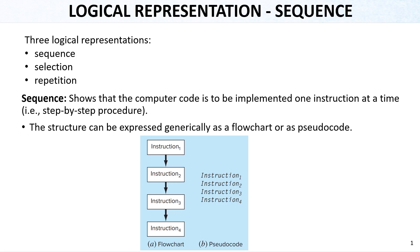In our previous slides, we talked about the logical representations. We said that there are three logical representations: sequence, selection, and repetition. These three are actually ways of showing the algorithms or the procedures that exist in algorithms — three different procedures or ways.